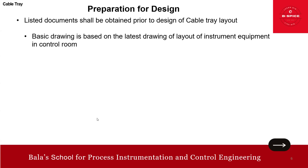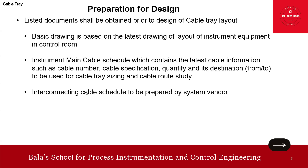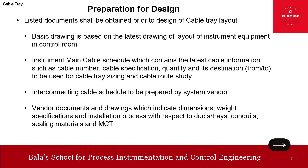For preparatory activities: we need the latest instrument equipment layout in the control room showing all the panels. We also need the instrument main cable schedule, which contains the latest cable information such as cable number, cable specification, and quantity - used for cable tray sizing and cable route study. Then interconnecting cable documents prepared by the system vendor, and vendor documents indicating dimension, weight specification, and installation details with respect to ducts, trays, conduits, ceiling, and MCT.